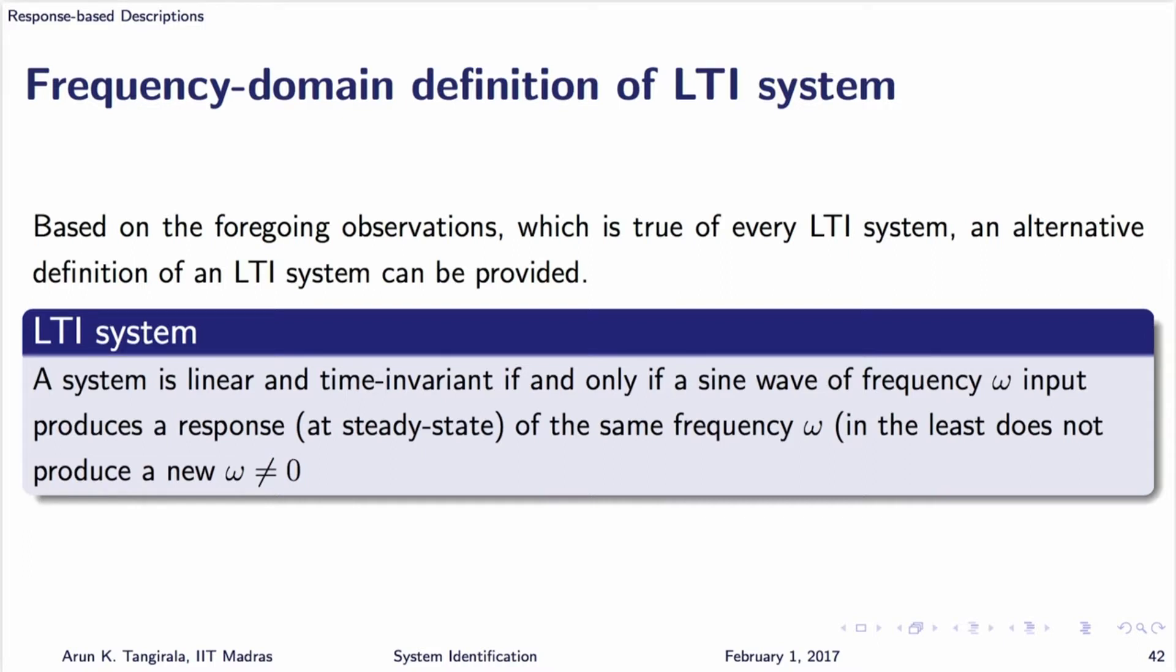You can now state that as both a necessary and sufficient condition. A system is said to be stable LTI, although I have not mentioned stable but it is implicitly understood. It is stable and LTI if the sine wave of frequency omega at the input produces a sinusoidal waveform of same frequency at the output after sufficiently long time. This is one way of checking for LTI nature of the system.